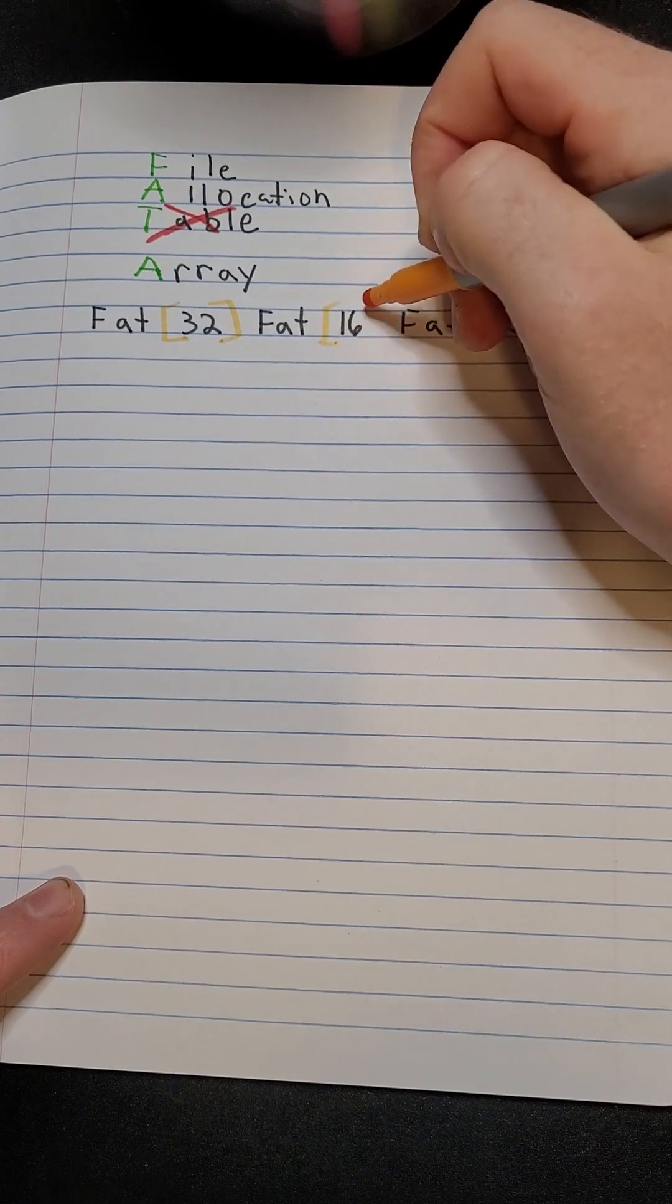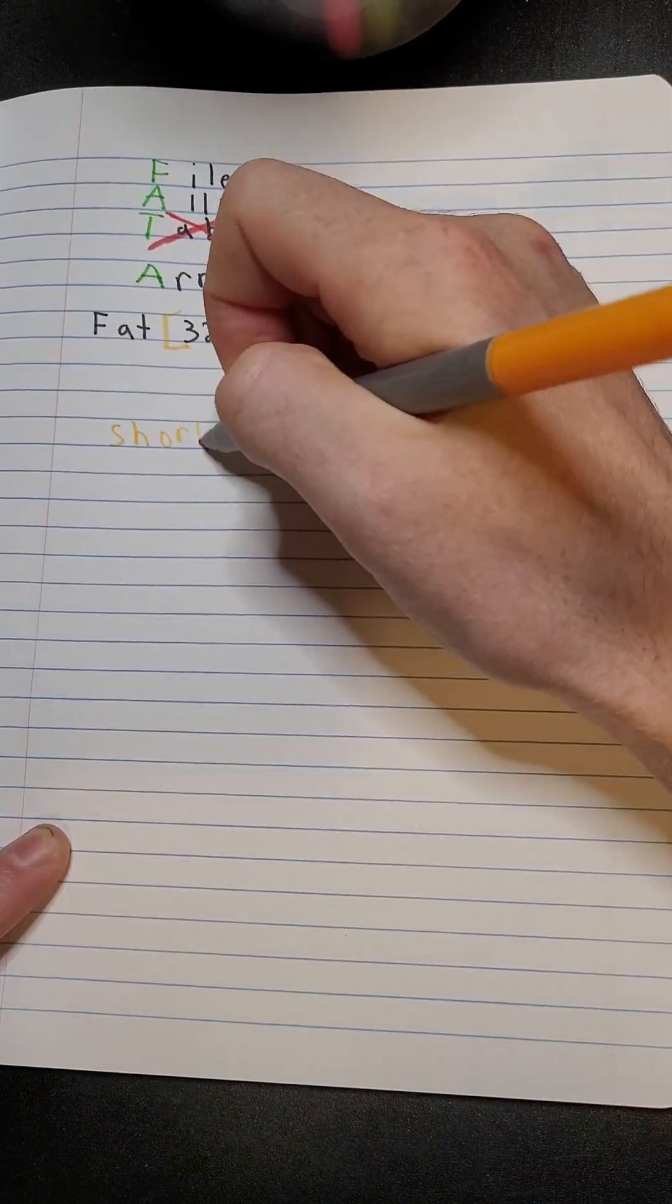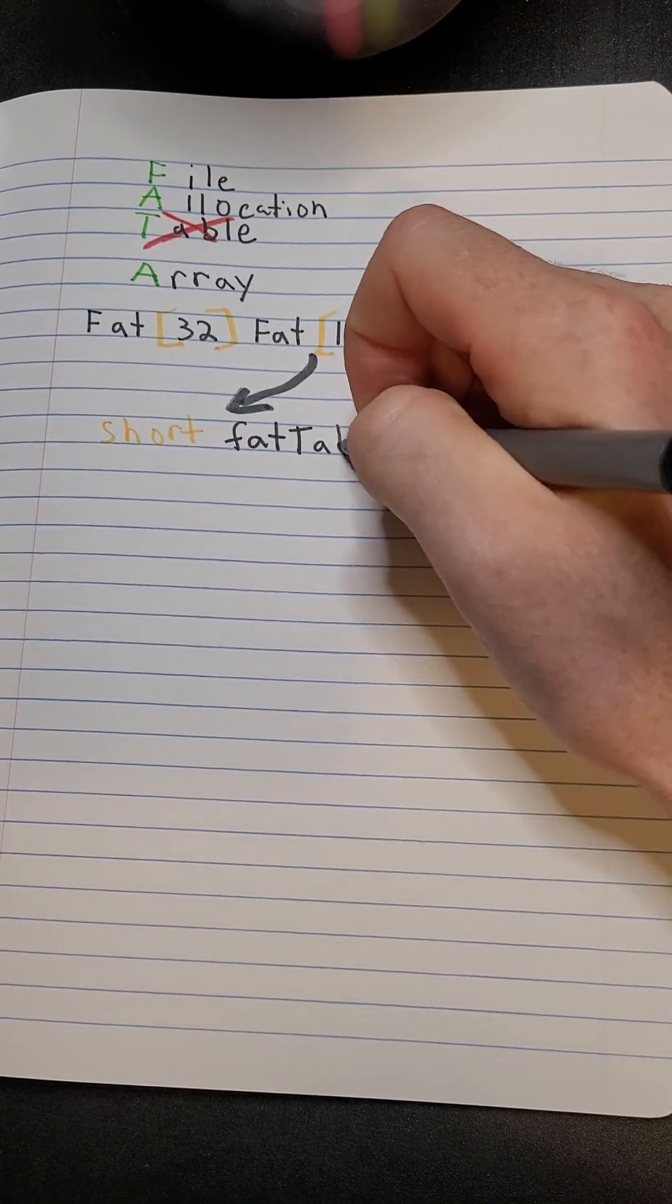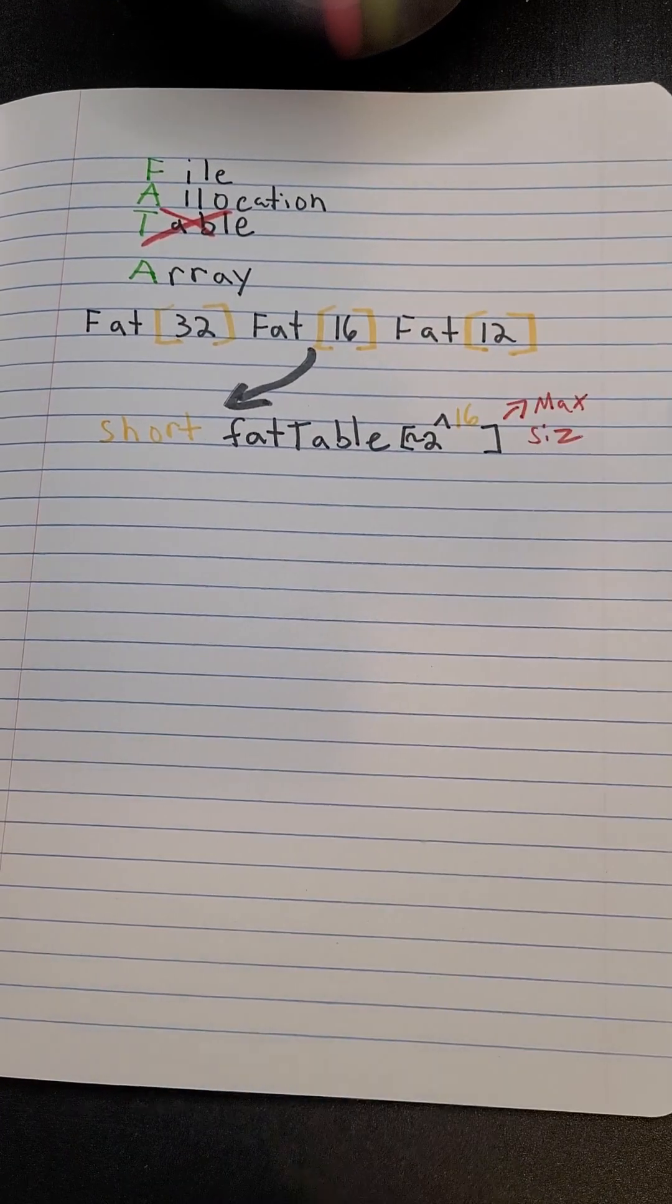The FAT number indicates the bit size of that array. So for example, if we make an empty FAT16 table, the max table size is around 2 to the power of 16.